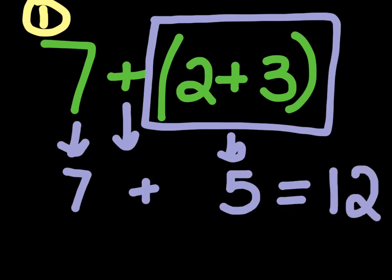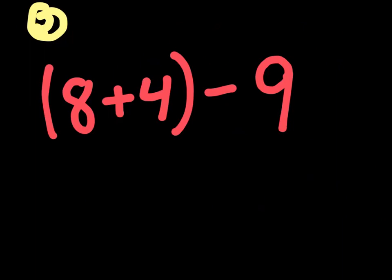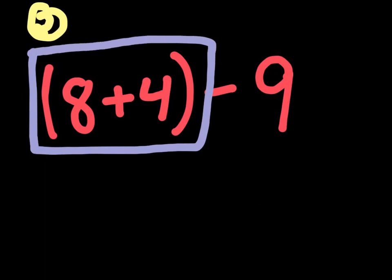Alright, let's go to question number 2. Alright, so question number 2 is, open parentheses, 8 plus 4, close parentheses, minus 9. And we know from our rules that we have to do whatever is inside of the parentheses. So inside of the parentheses, we have 8 plus 4. And 8 plus 4 is 12. So we write a 12.